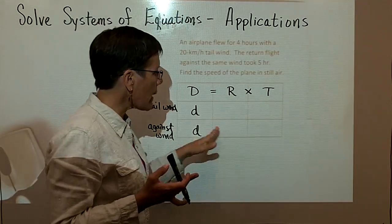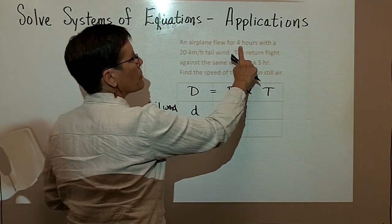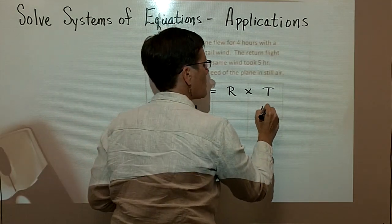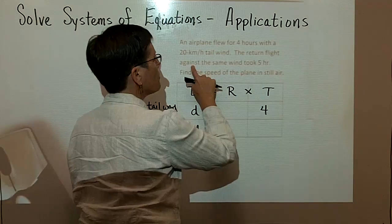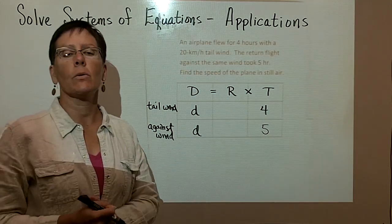So in these 6 boxes here, I have to fill them in. I do know that the airplane flew for 4 hours with this tail wind. So in this box right here, I'm going to put in a 4 for the tail wind. And the return flight against the same wind took 5 hours. So I can just put that value in as well.